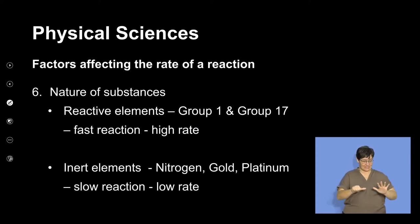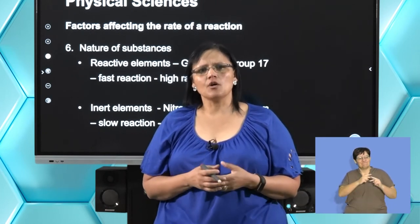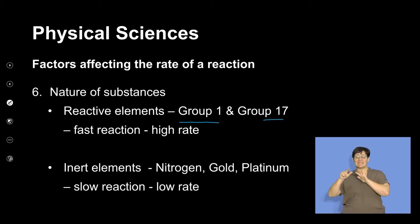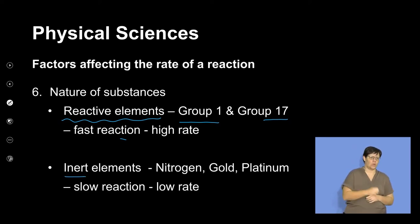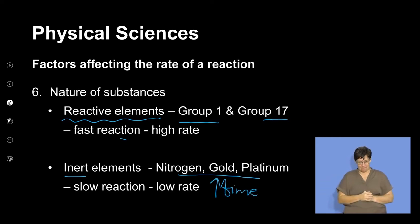The very last factor is the nature or type of reactants used. Some group 1 and group 17 elements, when they react, are very reactive — they make for fast, high-rate reactions. But inert elements like nitrogen, gold, and platinum don't really want to react. When they are in a reaction, they have slow reactions and a low rate, meaning it takes a long time.